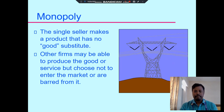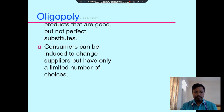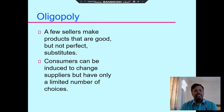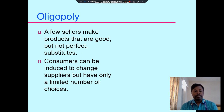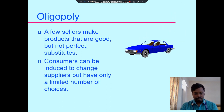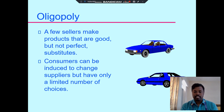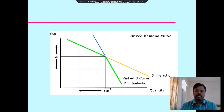The power sector is one of the best examples of a monopoly market. A few sellers may produce goods that are close but not perfect substitutes. In a monopoly market, consumers can be induced to change supplier but have only a limited number of choices. For example, there are different types of cars, but with a limited number of choices.